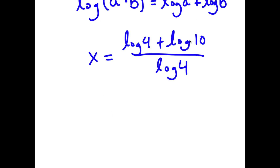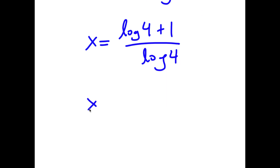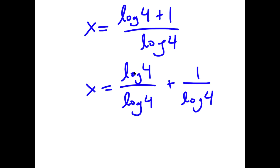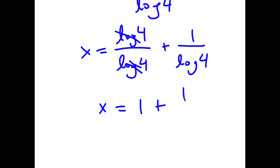Log 10 is actually equal to 1. So I have x is equal to log 4 plus 1 over log 4. I can rewrite this as log 4 over log 4 plus 1 over log 4. Log 4 and log 4 cancel out, so I have x is equal to 1 plus 1 over log 4.